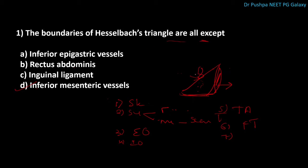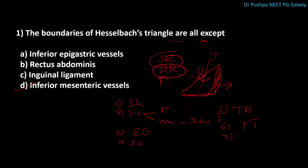But in Hesselbach's triangle area there are only two layers, that's why it is weak. Through this weaker area abdominal contents will come through, causing direct inguinal hernia. There are two important structures: the superficial ring, which is a defect in the external oblique muscle, and the deep ring, which is a defect in the transversalis fascia.